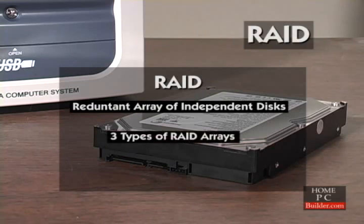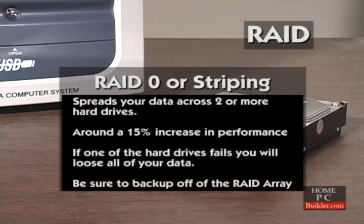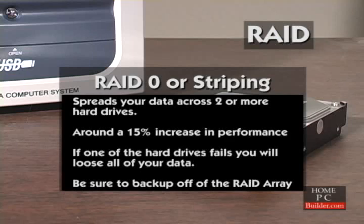There are three types of RAID arrays: RAID 0, 1, and 5. RAID 0, sometimes called striping, spreads the data across two or more hard drives, giving you around a 15% increase in performance. The downside of RAID 0 is that if just one of the hard drives fails, you will lose all your data — even on the hard drives that are still working — because a portion of your data was on the drive that is now dead. If you use RAID 0, make sure you have your important data backed up off the RAID array.